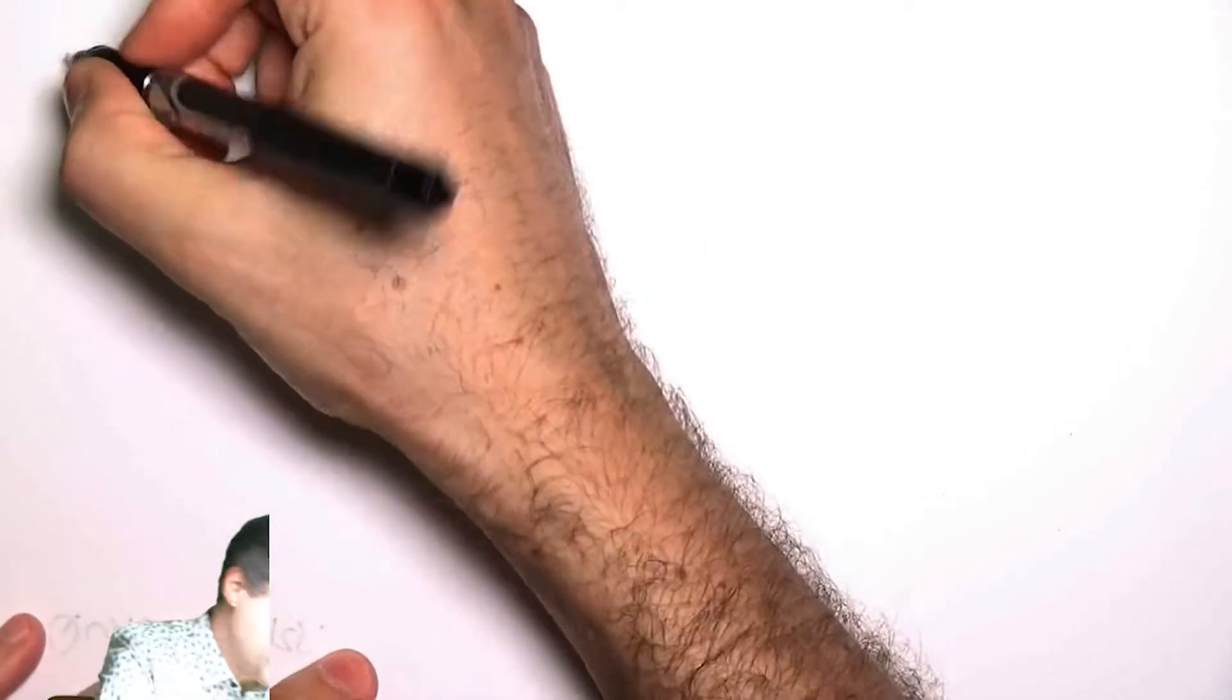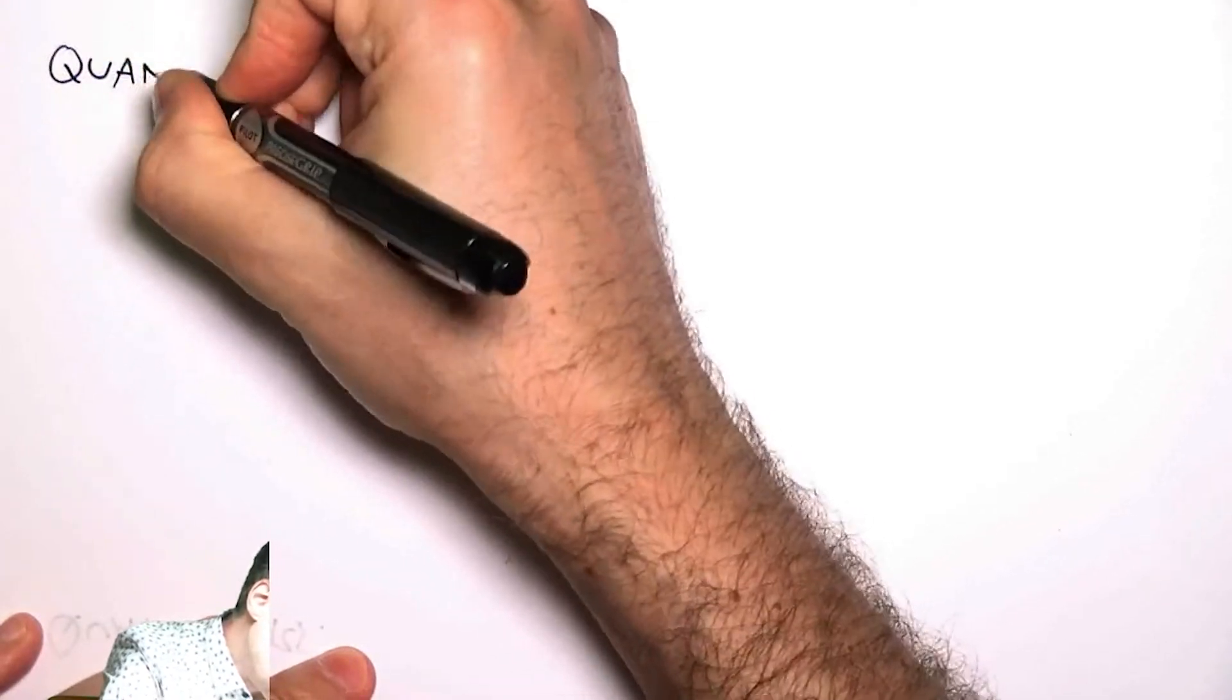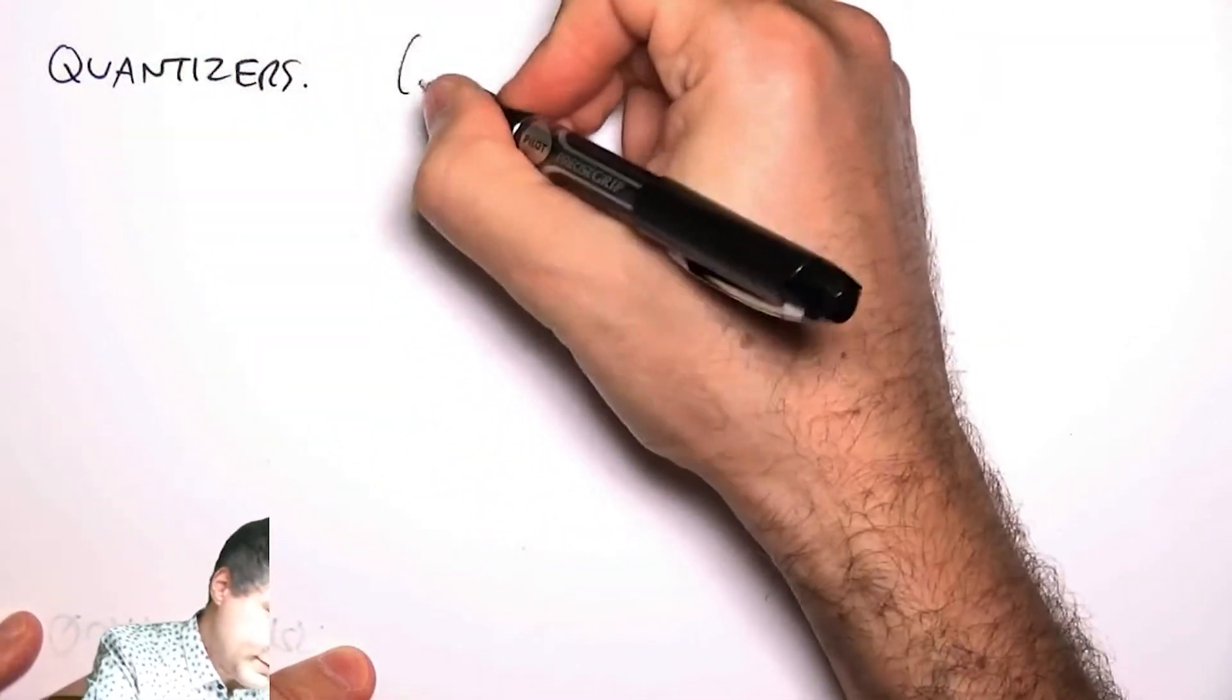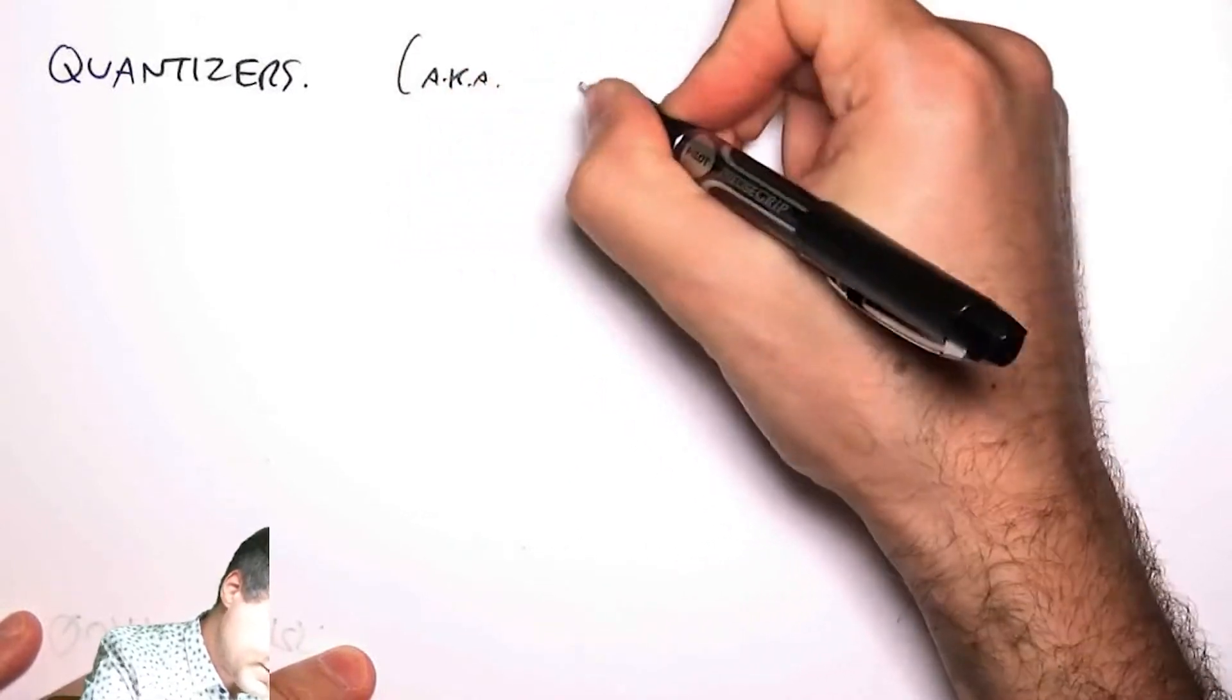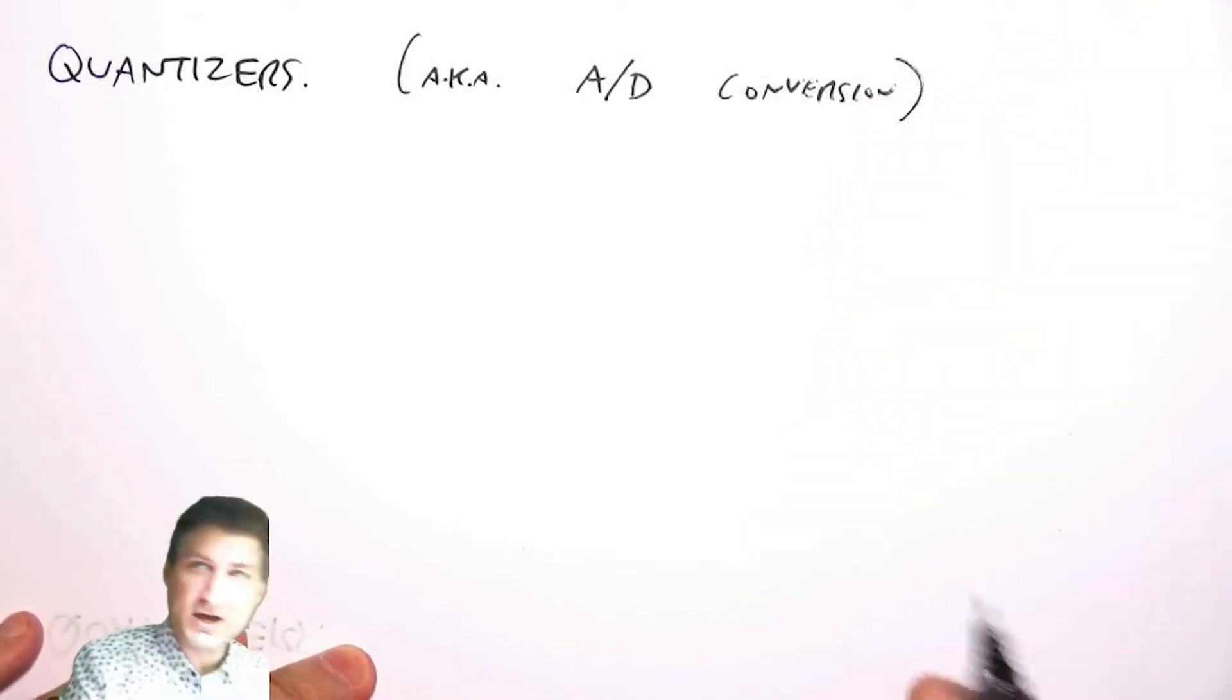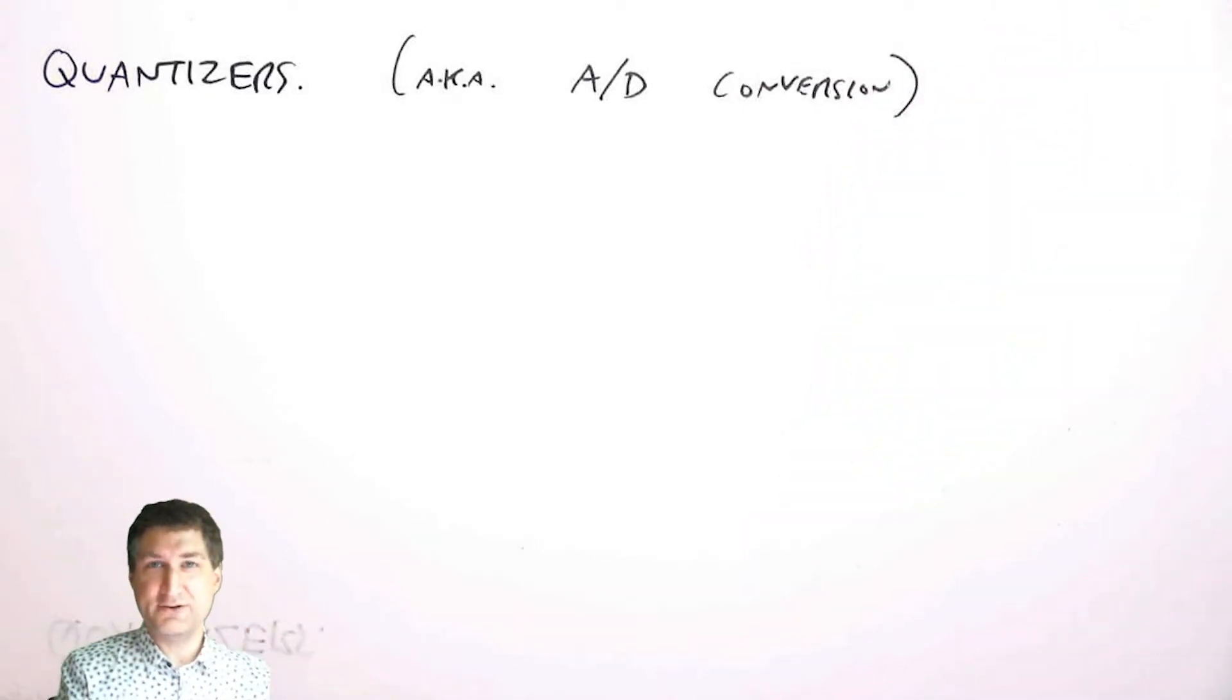So now I want to talk about a little side topic which is kind of an audio engineering problem but it's related to all the stuff we just talked about, which is the idea of a quantizer. Another way of thinking about this is called A/D conversion, analog to digital conversion. You have some continuous values you need to convert those into discrete values to put on a CD or encode into an MP3 player or something like that.